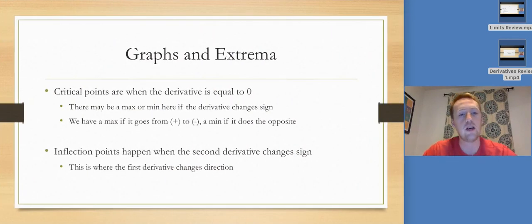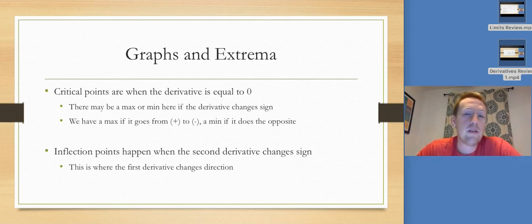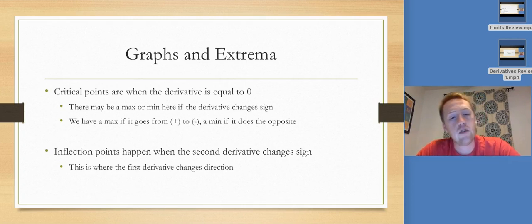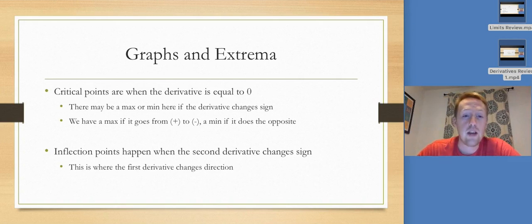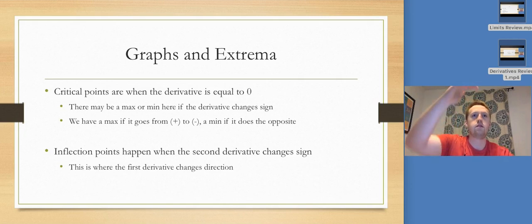Graphs and extrema: critical points are when the derivative equals zero. We might have a maximum there as long as the derivative changes sign. We get a max if it goes from positive to negative and a min if it goes from negative to positive. Positive to negative — there's a max.